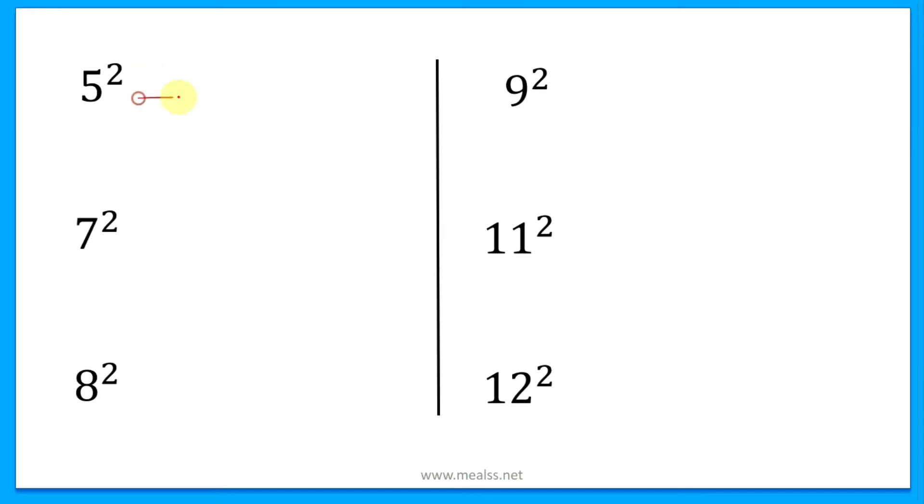So the first one, 5², gives you an answer of 25. The second one is equal to 49. The third one is equal to 64. Fourth one equals 81. Fifth one is 121, and the last one is 144.